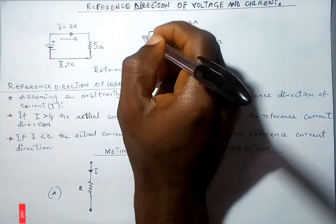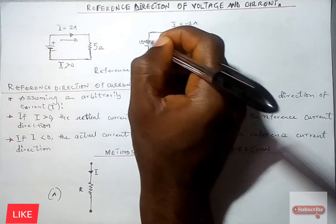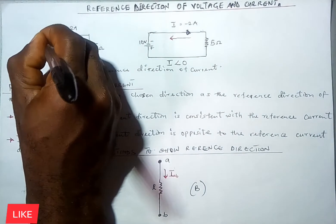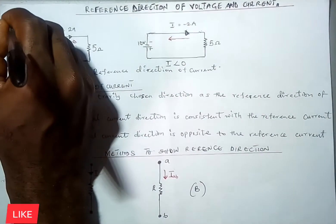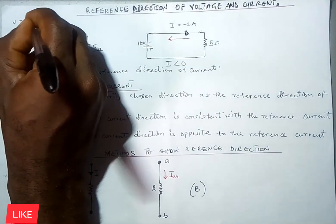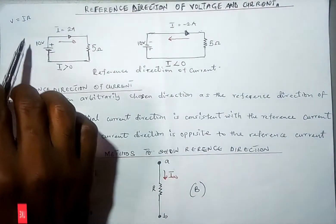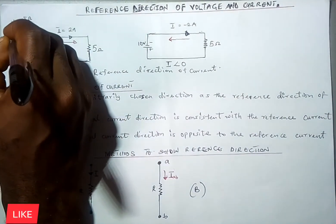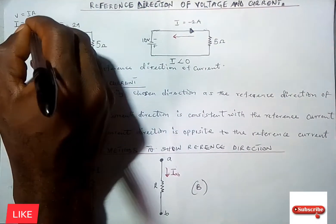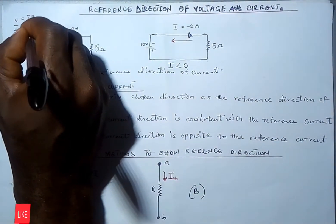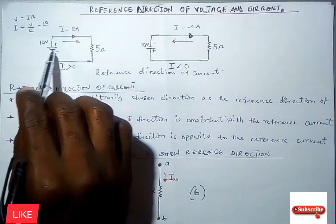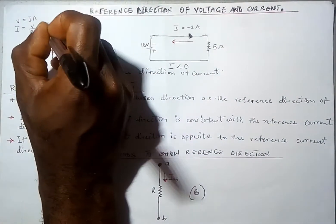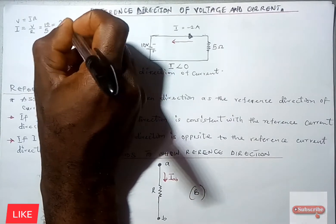Let's say we have 10V here. If we apply Ohm's law — V = IR — we are looking for the current I, which is V over R. Our V is 10 and our R is 5, which gives us 2A. So the current is positive 2A.